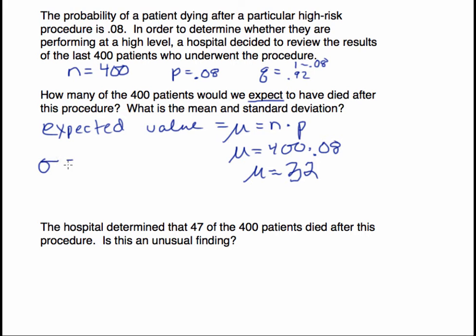The standard deviation can be found by taking n times p, then multiplying it by q, and then taking the square root. So if we plug these in, we would get the square root of 0.08 times 400 times 0.92.